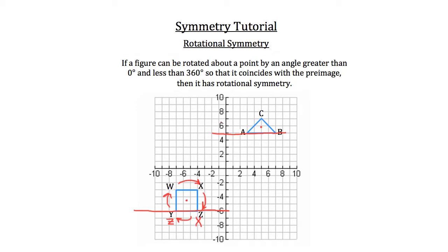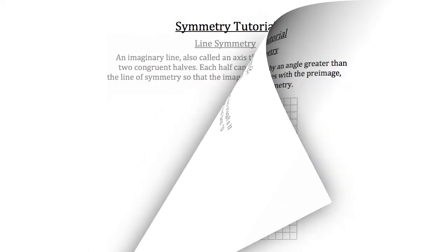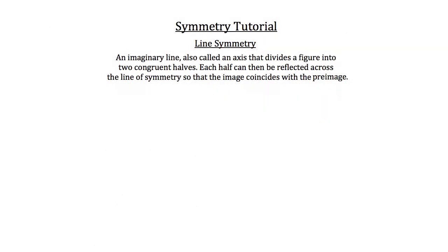The other type of symmetry that we want to talk about in geometry is line symmetry. The definition of line symmetry is it's an imaginary line, also called an axis, that divides a figure into two congruent halves. Each half can then be reflected across the line of symmetry so that the image coincides with the preimage.